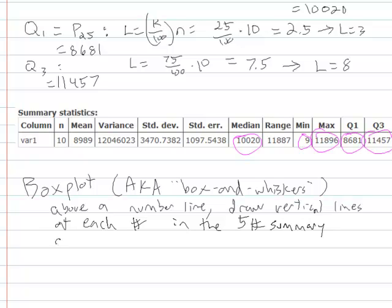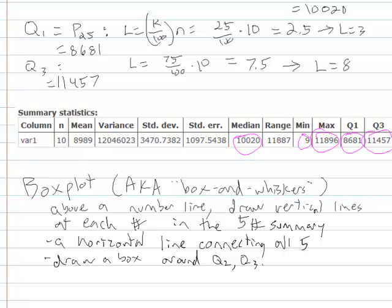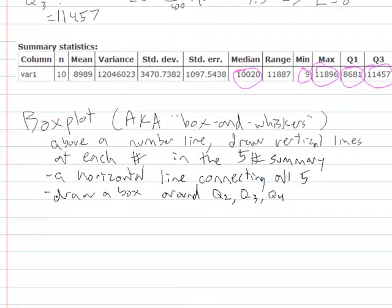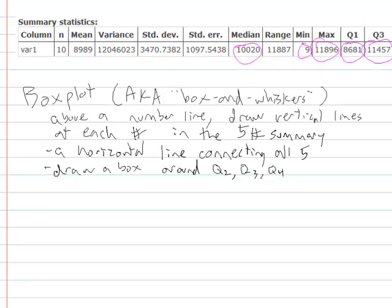It's a visualization of the distribution above a number line. We draw vertical lines at each number in the five number summary. And then a horizontal connecting all five. And then we also draw a box around Q2, Q3, and Q4. Let's see what that would look like for this particular set of data that we just did.